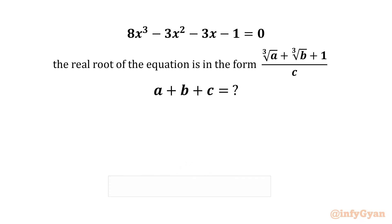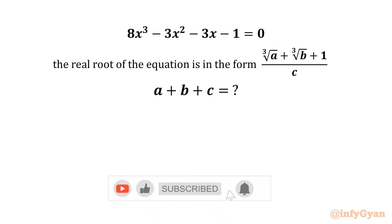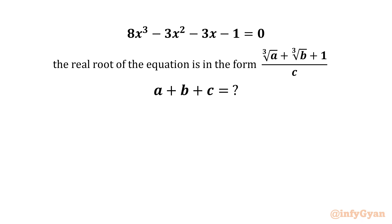Hello my dear friends, welcome back to NcGyana. Today in this video we are going to solve one very interesting question from algebra. We have one cubic equation: 8x³ - 3x² - 3x - 1 = 0, and given that the real root of this cubic equation is in the form ∛a + ∛b + 1 over c. Then we have to evaluate a + b + c.